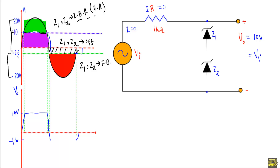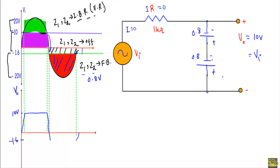When Vi becomes less than -1.6V, both Z1 and Z2 are in forward bias. We can replace each with their built-in potential of 0.8V. This gives a circuit with two 0.8V voltage sources in series. Their negative terminals connect to the positive terminal of the output voltage and their positive terminals connect to the negative terminal of Vo. Therefore, the output is fixed at -1.6V.